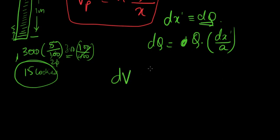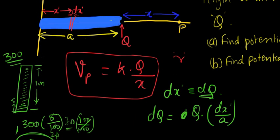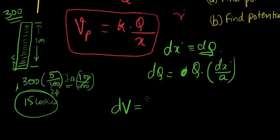So dQ is going to be equal to Q times dx prime over a. The fraction of the length being considered over the total length times the total charge. It's pretty simple. Now let's derive dV first, and then we can integrate that.